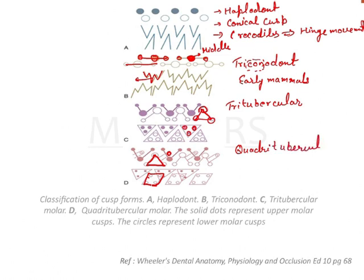Quadritubercular form. In this what happens? The fourth cusp which is known as the secondary cusp. The first three cusps are known as the trigone, the primary cusp. And the fourth cusp which is developed is known as the secondary cusp and this cusp gives an outline of a quadrilateral and that is why it is known as quadritubercular arrangement of the cusp. And this is of course found in the human beings and here the occlusion develops. So there is an occlusal contact relationship between the upper and lower jaws which is seen in the quadritubercular stage.